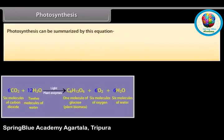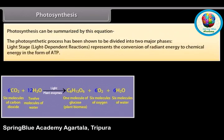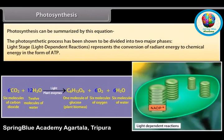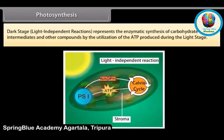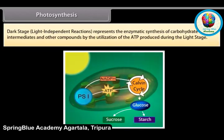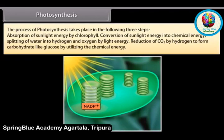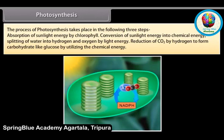The photosynthetic process is divided into two major phases. The light stage, or light-dependent reactions, represents the conversion of radiant energy to chemical energy in the form of ATP. The dark stage, or light-independent reactions, represents the enzymatic synthesis of carbohydrate intermediates and other compounds by utilization of the ATP produced during the light stage. The steps include: absorption of sunlight energy by chlorophyll, conversion of sunlight energy into chemical energy, splitting of water into hydrogen and oxygen by light energy, and reduction of CO2 by hydrogen to form carbohydrates like glucose by utilizing the chemical energy.